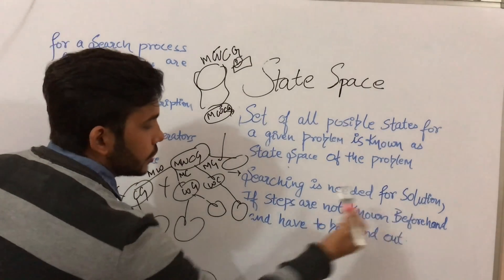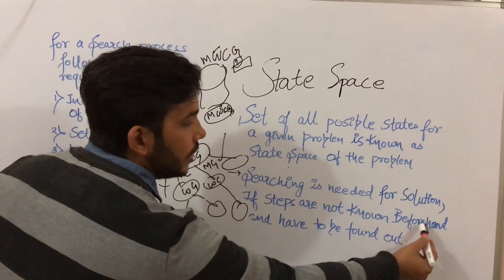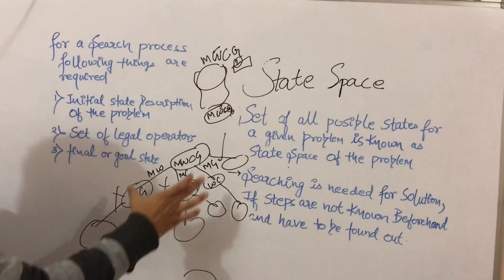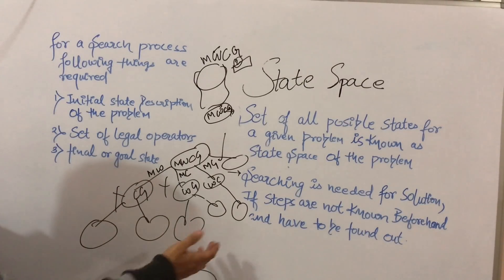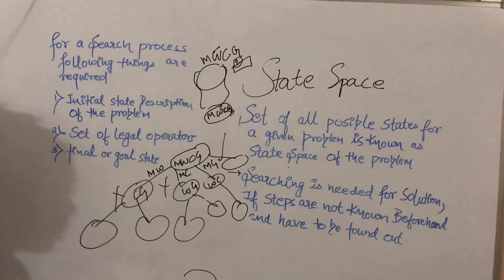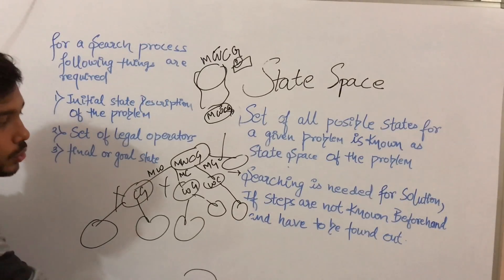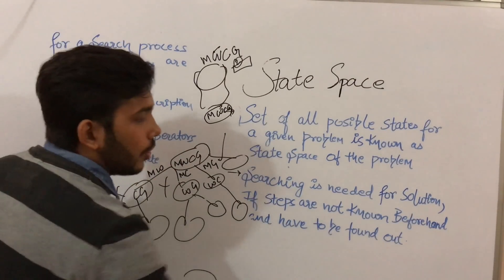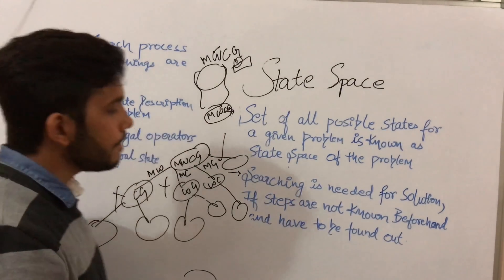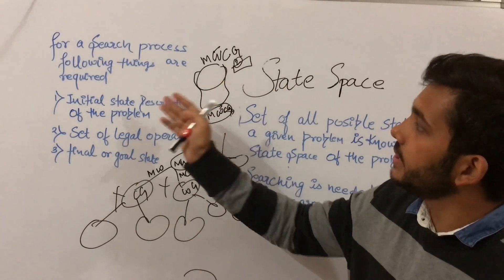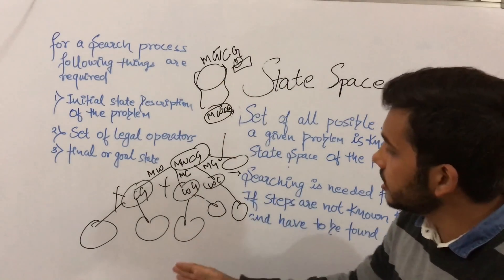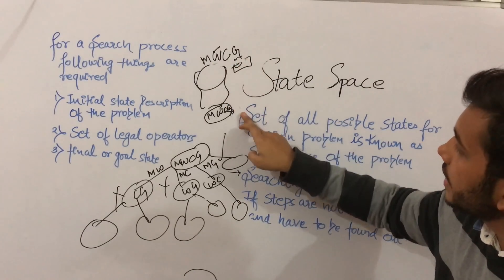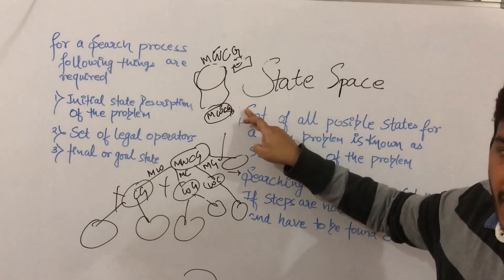Searching is needed for a solution if the steps are not known beforehand and have to be found out. This was our problem — we need to find the solution, but we do not know which steps to follow to get to the result. So searching is needed when the steps are not known beforehand. In this search process, we are searching for how the man would get to the other side of the bank with all four items.